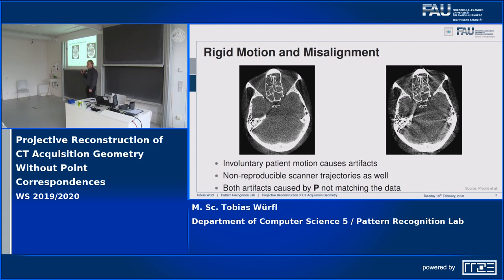If we don't get this calibrated data right, there can be cases — for example, involuntary patient motion — where our reconstructions, which should look like this, get degraded by artifacts like streaking artifacts, which you see on the right side.